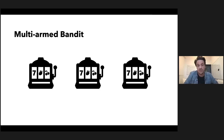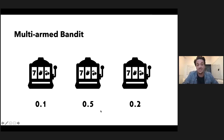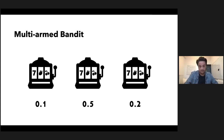Multi-armed bandits take their name from casino slot machines, and specifically their role in the following thought experiment, which dates back at least to the first half of the 1900s. Imagine you enter a room in a casino and find a row of slot machines, each with potentially different probabilities of paying out. These values are the probability that if you play a machine, you'll win something. You go into this room with a bag full of tokens to put into these machines one at a time, aiming to win as much money as possible — but you don't know the payout probabilities initially; you can only estimate them by playing.